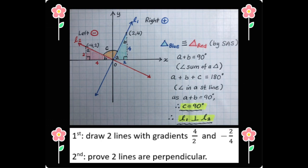As you can see, the red triangle is congruent to the blue triangle by SAS test, side angle side. So they are identical in sides and shape. Let's name two angles in each triangle as angle A and angle B. By angle sum of a triangle, A plus B must be 90 degrees.